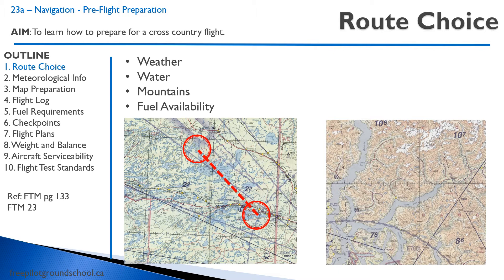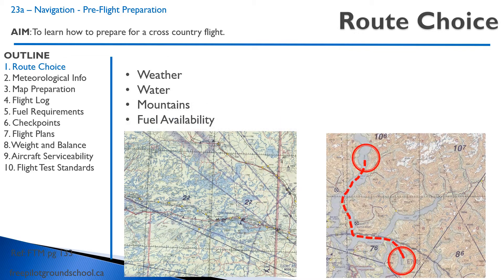Similarly, if we look at the mountains, you have this route here going direct where you have to cross mountains at 8,000 or 10,000 feet — that might be a bit higher than you're planning. So probably the safer route is to go a bit lower but go over the water where you have a lot more options if the weather gets bad.